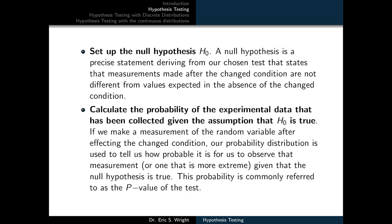The third step is to calculate the probability of the experimental data collected, given the assumption that H sub 0 is true. If we make a measurement of the random variable after affecting the changed condition, our probability distribution tells us how probable it is to observe that measurement or one that is more extreme, given that the null hypothesis is true.